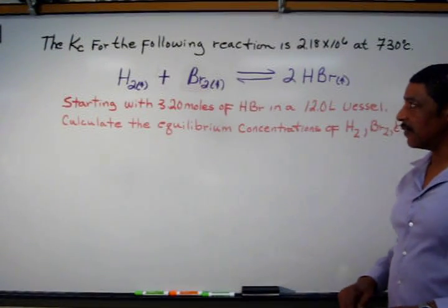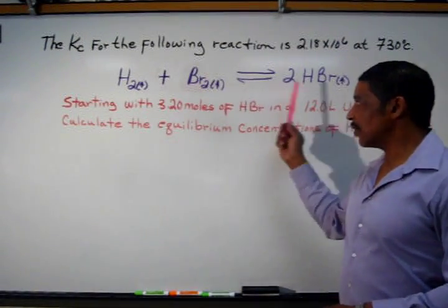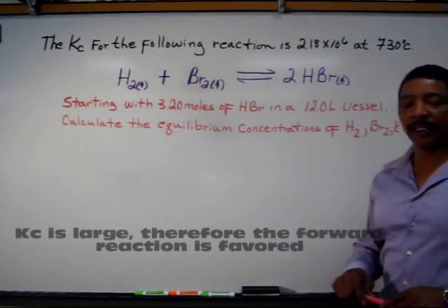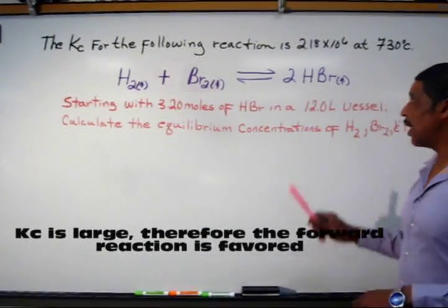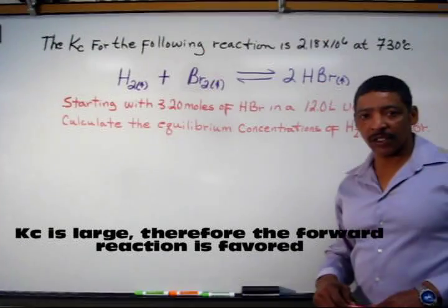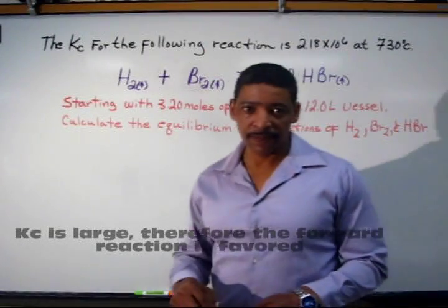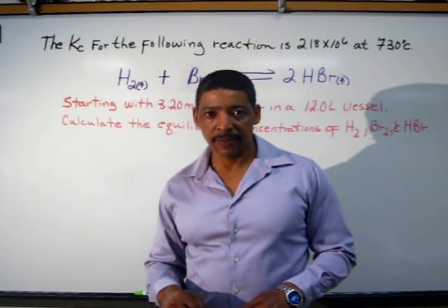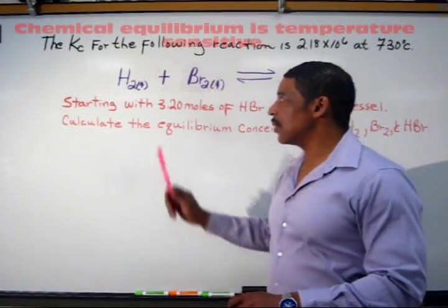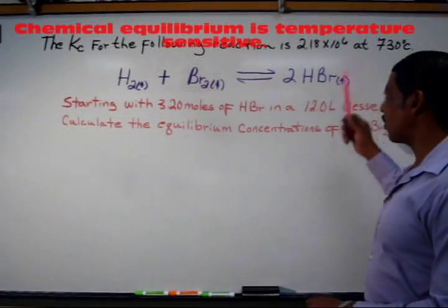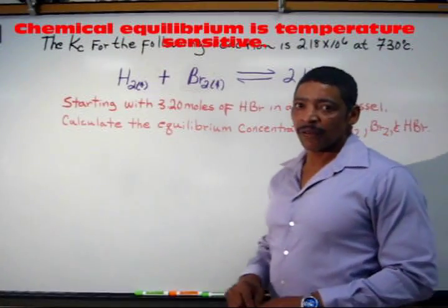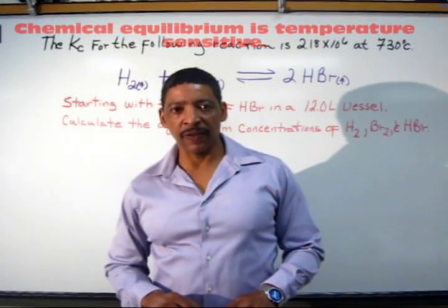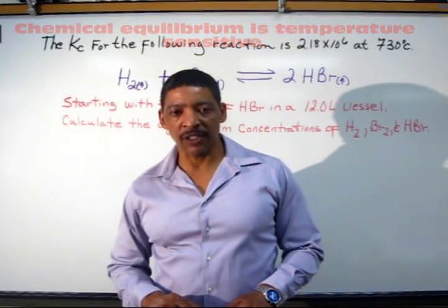We are also given a Kc value for this reaction, which is 2.18 times 10 to the 6 at a temperature of 730 degrees Celsius. This Kc value is only valid at that temperature. In other words, for every equilibrium constant, a specific temperature must be indicated.